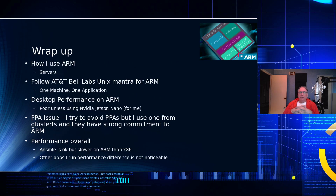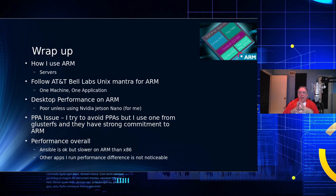So how do I use ARM? I use it for servers. I have one desktop that is ARM-based. I follow the AT&T Bell Labs mantra on all my ARM machines: one machine, one application. That was true because of the speed of machines back then, and I hold to that for ARM until they get up in capability. If you're buying a $50 machine, you can't expect a lot from it, but it also makes it a lot easier to manage. Desktop performance on ARM is poor unless it's NVIDIA Jetson — at least that's been my experience. PPA issues are real — most definitely there are issues with PPAs, and I try to avoid them in server environments.